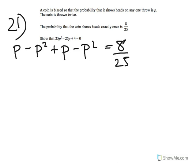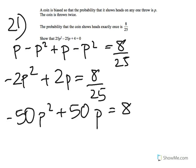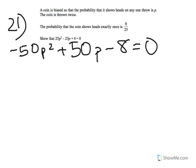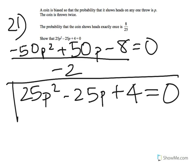Simplifying the left-hand side: 2P minus 2P² equals 8/25. Multiplying both sides by 25: negative 50P² plus 50P equals 8. Subtracting 8: negative 50P² plus 50P minus 8 equals 0. Dividing the whole equation by negative 2: negative 50P² ÷ −2 is 25P², 50P ÷ −2 is −25P, and −8 ÷ −2 is positive 4. So 25P² minus 25P plus 4 equals 0 — proved correct.